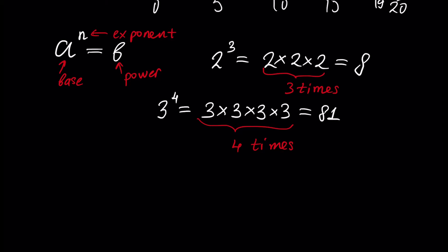If n is equal to 2, then it is called a square — so a squared. And if n is equal to 3, this is called a cube — a cubed. Everyone must remember that a to the power of 1 is a, and a to the power of 0 is 1.